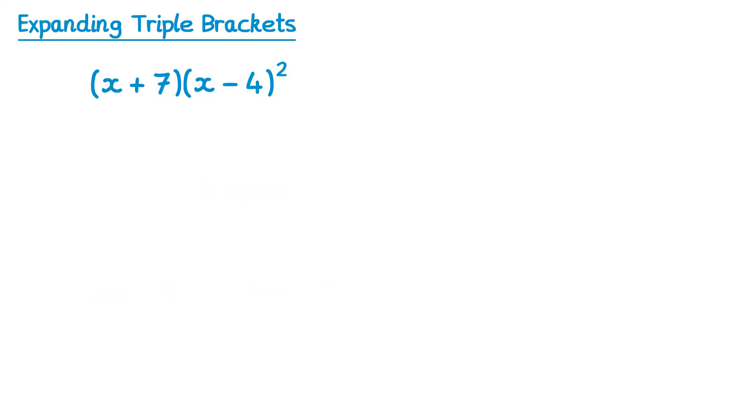There's one final thing I want to show you. Sometimes questions could be written like this. You have to be careful with the last part. When it says x minus 4 all squared, that's referring to x minus 4 times another x minus 4. Some people may incorrectly expand this as x squared minus 16. What we should actually do is write this bracket twice, like this, and then carry on as normal.